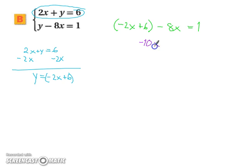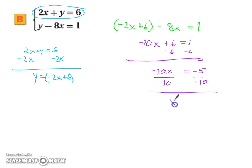We have negative 10x plus 6 equals 1. Subtract 6 from both sides, leaving us with negative 10x equals negative 5. And then we can divide by negative 10 on both sides, leaving us with x equals positive 1 half.